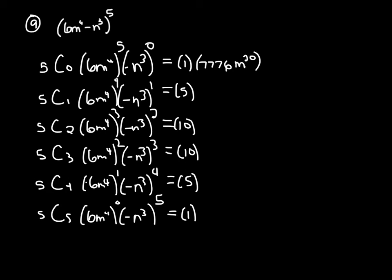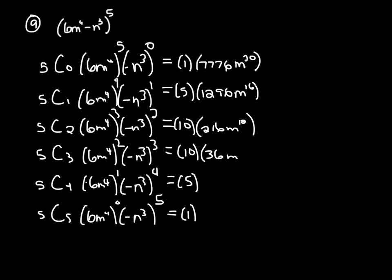Following that pattern, (6m⁴)⁴ gives 6 to the 4th — which is 1,296 — and m to the 16th. Then (6m⁴)³ is 216m to the 12th. (6m⁴)² is 36m to the 8th. (6m⁴)¹ is just itself, which is 6m to the 4th. And anything raised to the 0 power is just equal to 1.